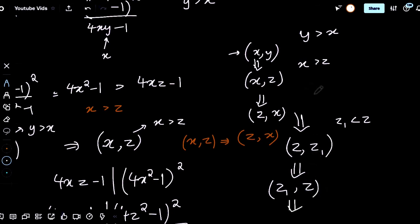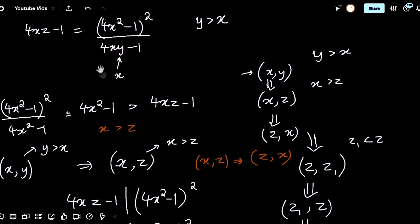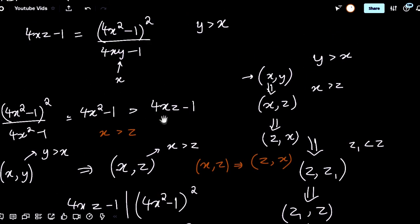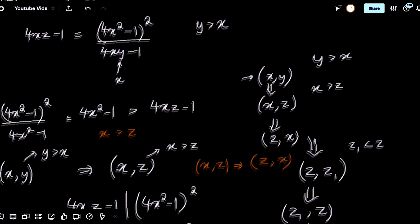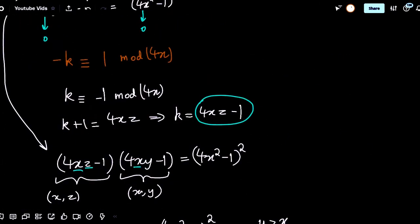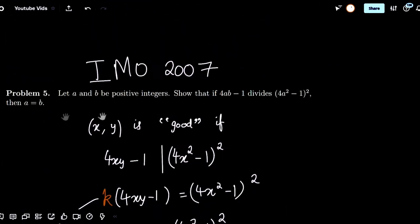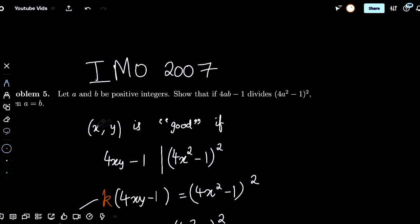Each time, the solution gets smaller and smaller. And this contradicts the minimality of solutions because obviously there must be one smallest solution. Therefore, by infinite descent, we have obtained a contradiction. And for x, y to be a good pair, it is necessary that x must equal y. And that is the problem proved.